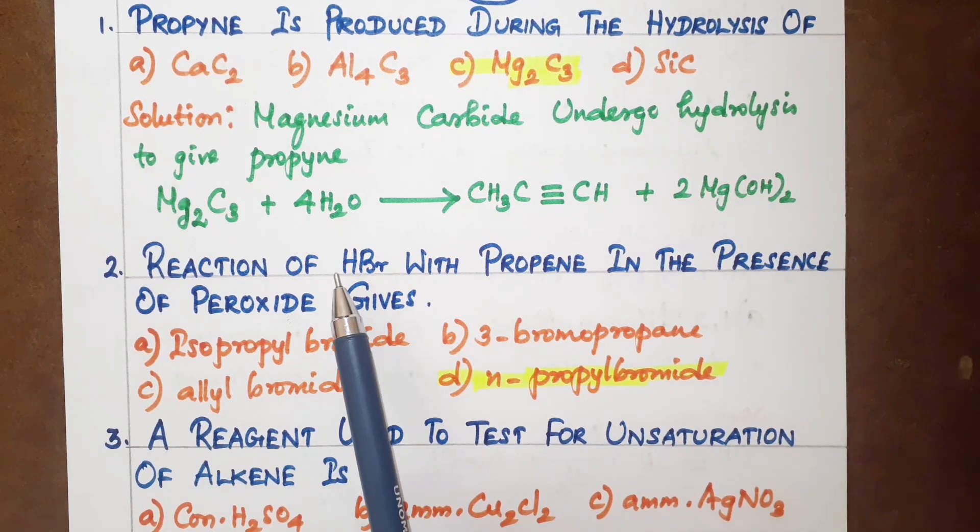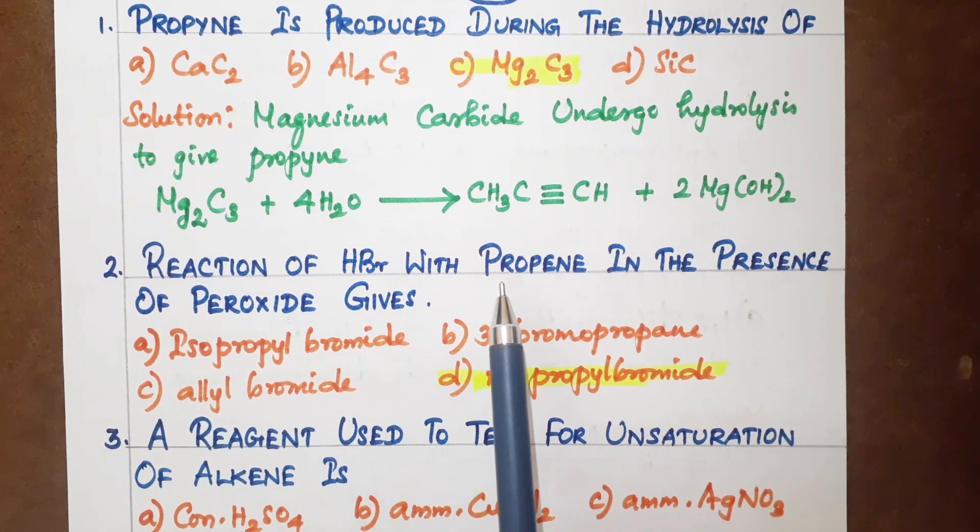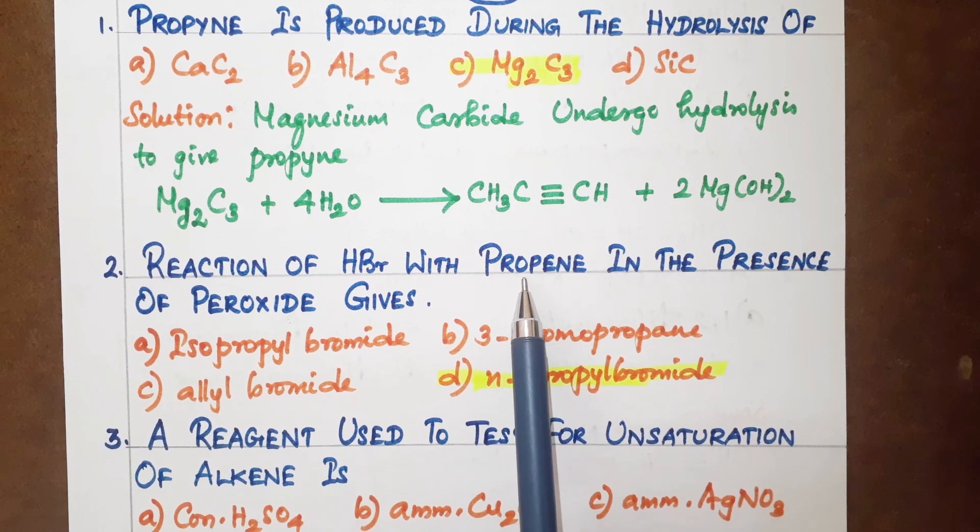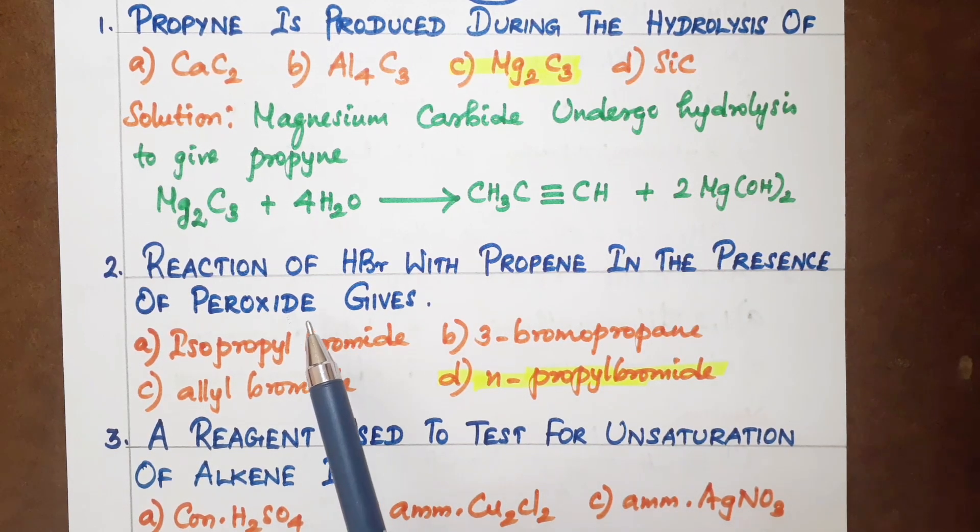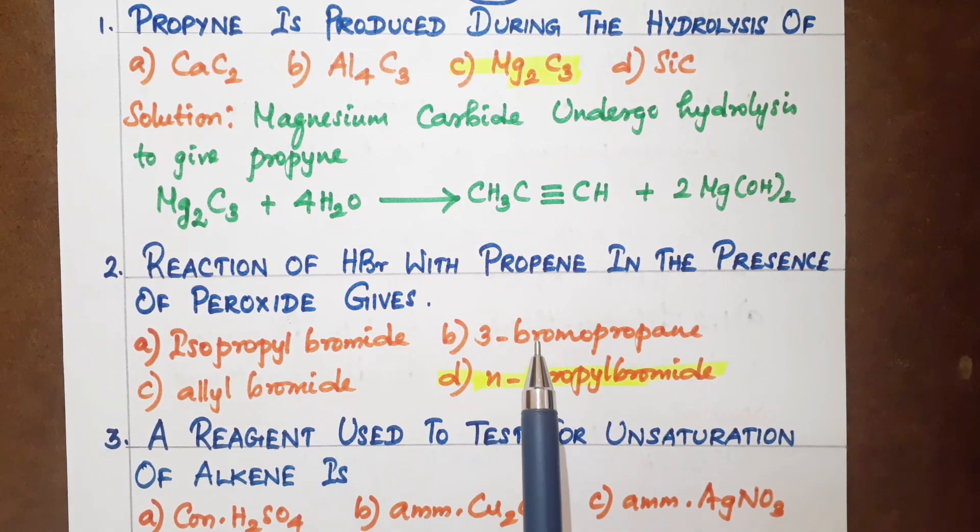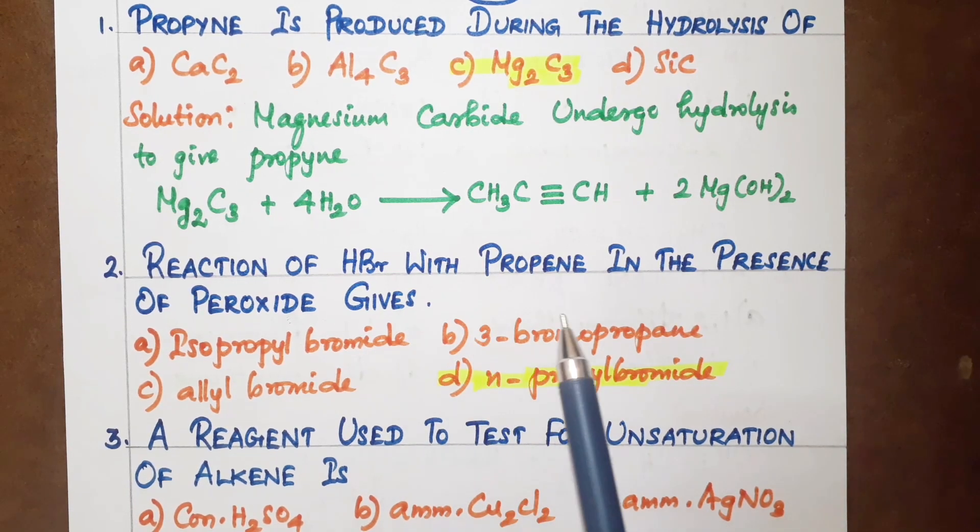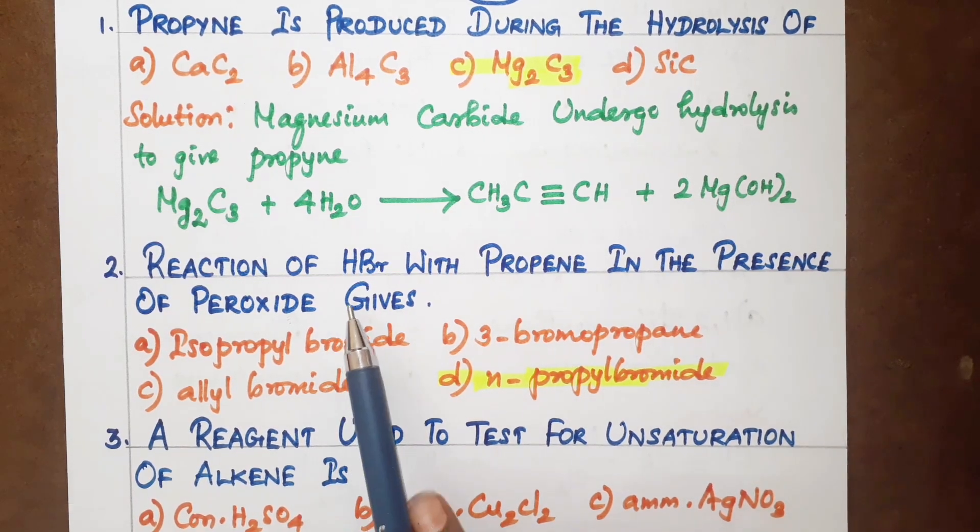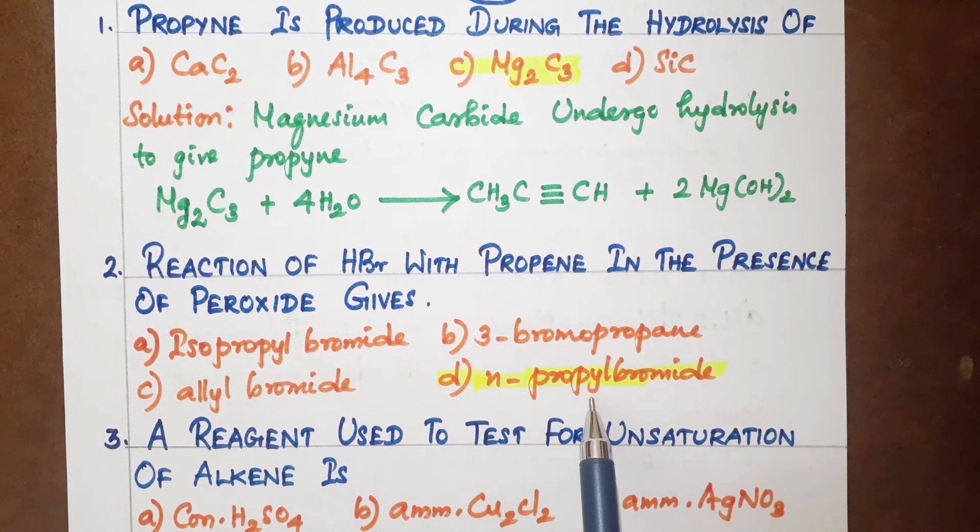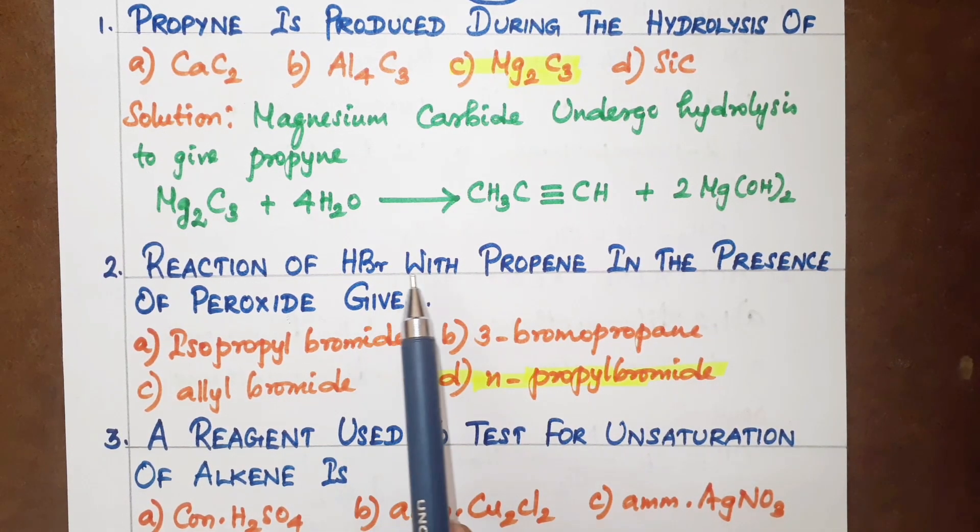For the reaction of HBr with propene in presence of peroxide, we apply anti-Markovnikov's rule, which gives the anti-Markovnikov product. The answer is n-propyl bromide.